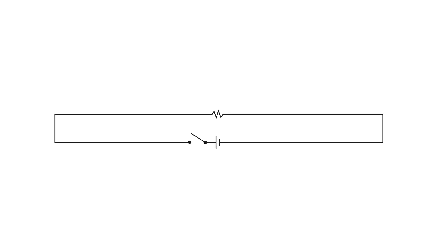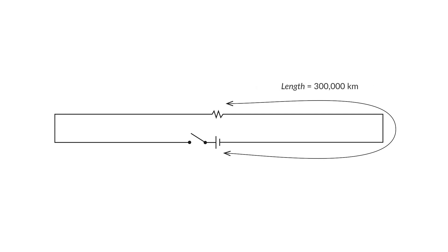Here's the brain teaser in question. What we're looking at is a circuit diagram of a battery and a switch connected to a pair of wires that are each 300,000 kilometers long, and those wires loop back to a light bulb placed one meter away from that battery and switch. When that switch closes, how long does it take for a signal to be intercepted by that light bulb? The time is the gap divided by the speed of light, so it takes three nanoseconds.